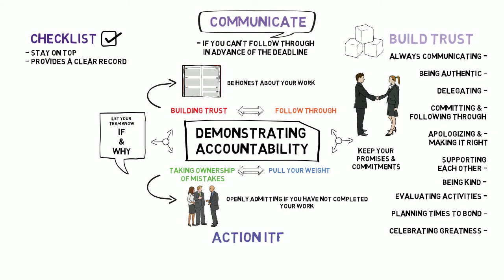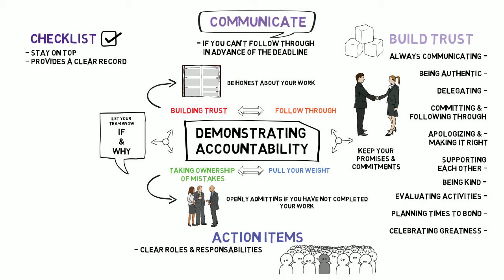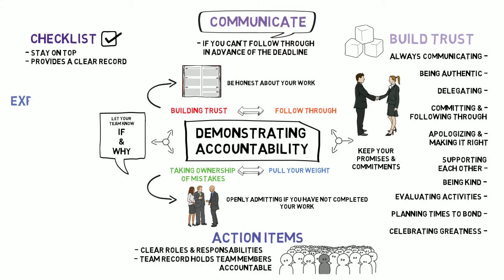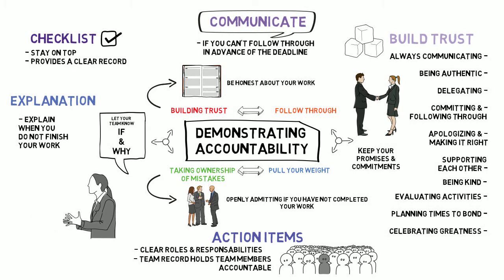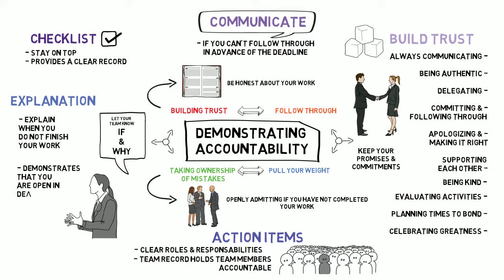You can make sure that you have clear roles and responsibilities within the team so that everyone knows what each member of the team is responsible for. Using action items will ensure that there is a team record that can hold team members accountable. Providing explanations when you do not finish your work really demonstrates your accountability. Explaining why you did not complete something rather than just simply saying you didn't do it will demonstrate that you are open in your dealings with the team and they will be more likely to understand.